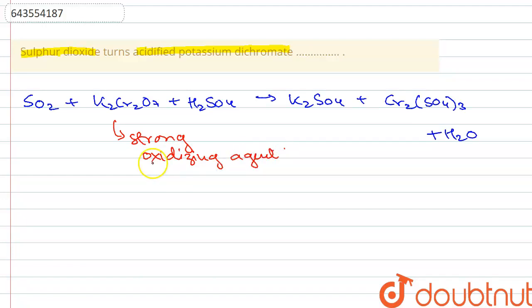And hence the sulfur dioxide gets oxidized to sulfate and chromium ion in potassium dichromate. So what happens is, it acts as a strong oxidizing agent. So it oxidizes sulfur dioxide while itself it gets reduced.